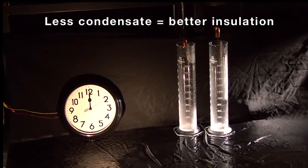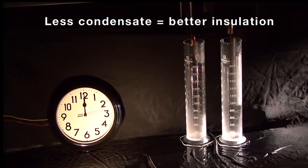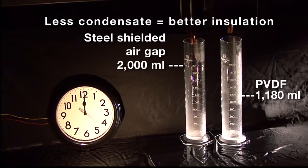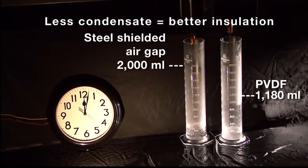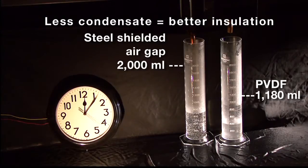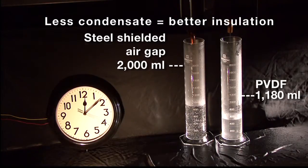The test concludes when the cylinder on the left is at 2,000 milliliters and the cylinder on the right is at 1,180 milliliters, indicating that the dispersion assembly with the PVDF insulation significantly outperformed the dispersion assembly with the stainless steel shielded air gap insulation.